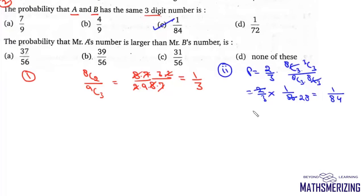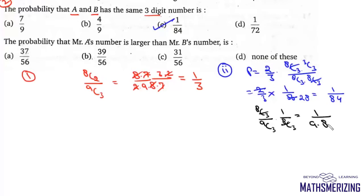Combining, we get 2/3 × 1/8C3. Since 8C3 = 56, this gives 2/3 × 1/56 = 1/84. An alternative method: for Mr. A, he must choose any 3 out of 8, so it is 8C3 divided by 9C3, and B must choose the same, giving 1/8C3. This simplifies to 1/(9×8×7/(3×2)) = 1/(12×7) = 1/84. So the probability is 1/84.